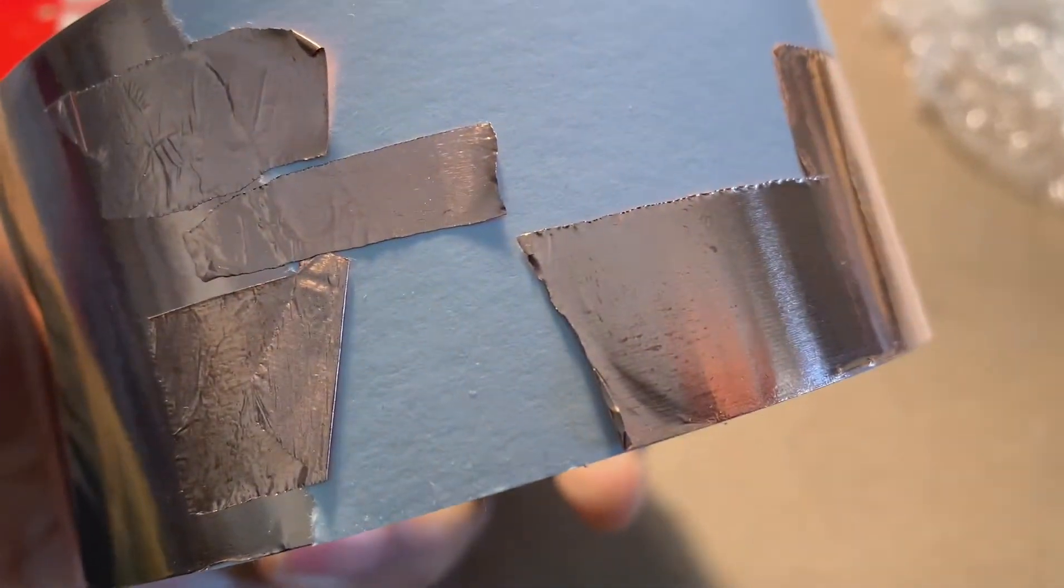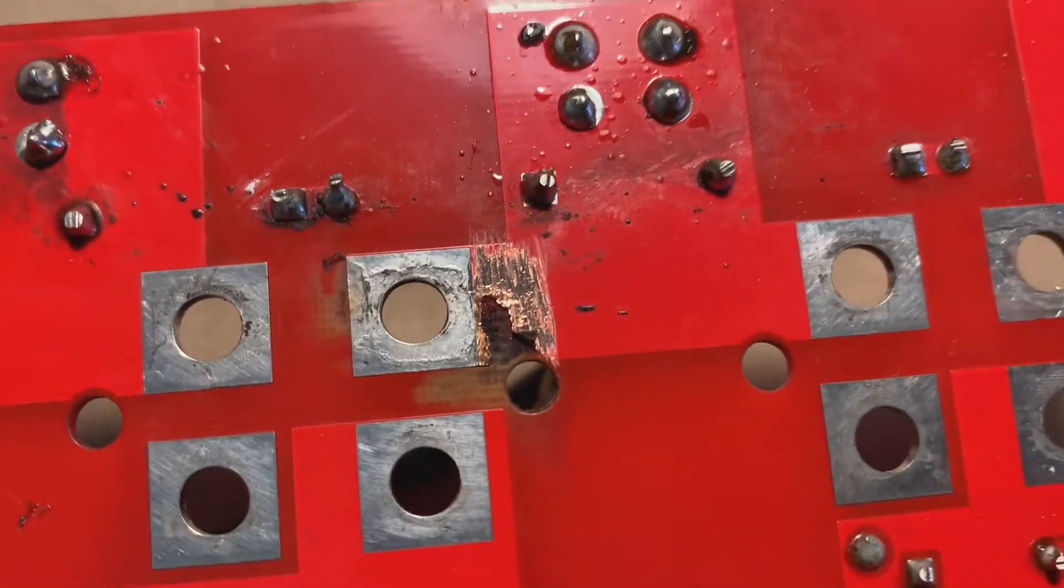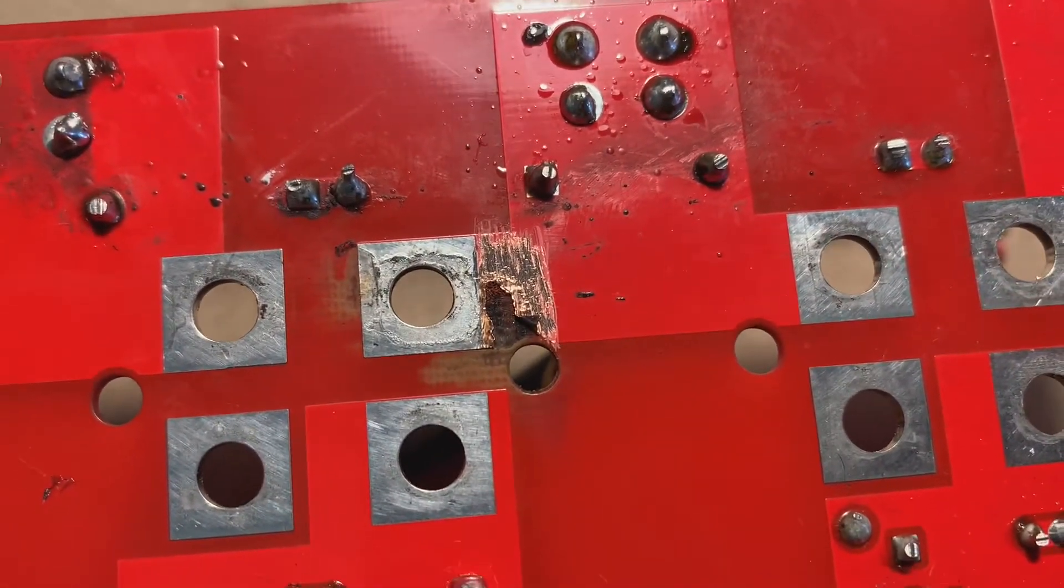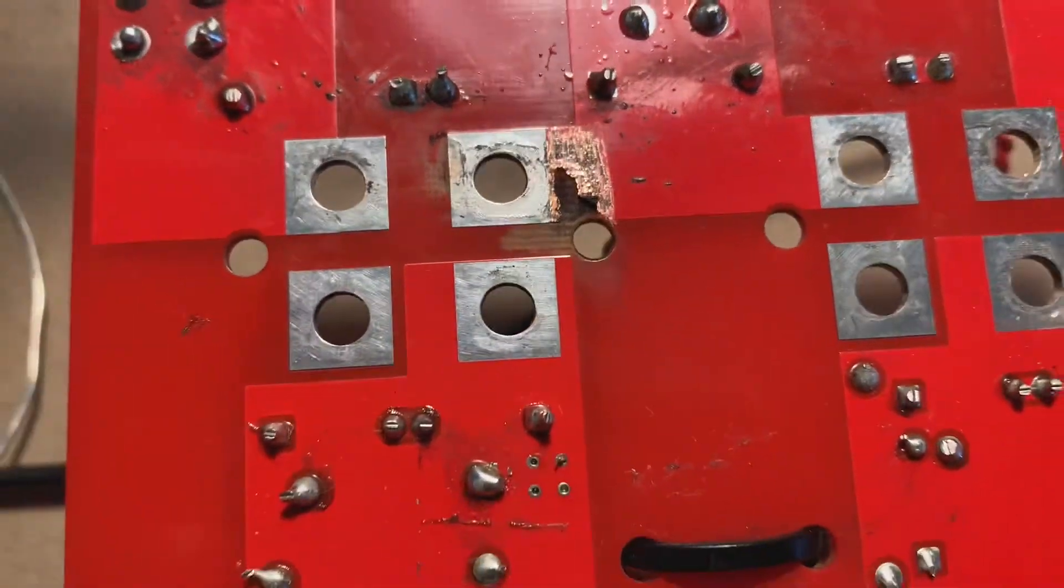Basically tear off a thin strip, place it over the area where the trace is blown right there and then just flow some solder over it and that's basically it. Let me show you how I do this.